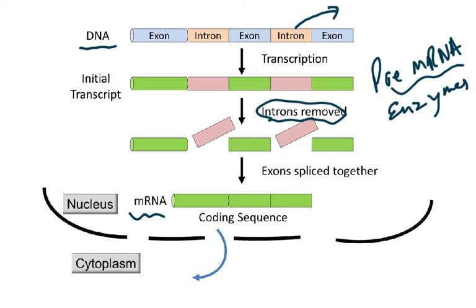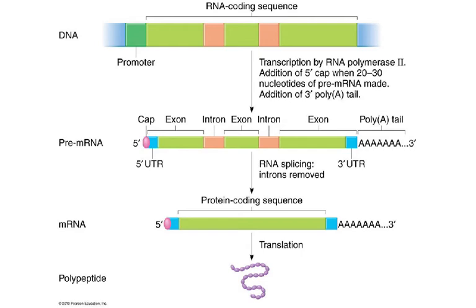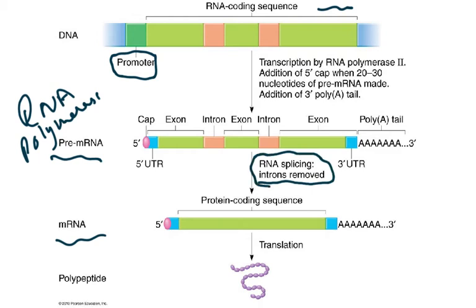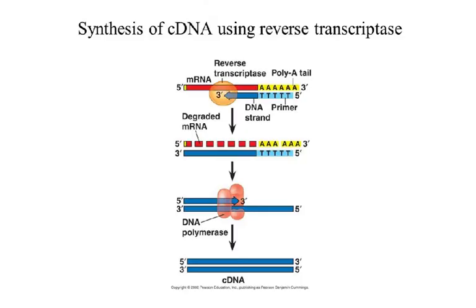The mature mRNA then enters the cytoplasm where translation takes place. There is a promoter region just before the gene, recognized by RNA polymerase. The pre-mRNA contains both exons and introns copied; then an enzyme called a splizozyme performs RNA splicing to produce the final mature mRNA, which enters the cytoplasm and is translated on the ribosome.